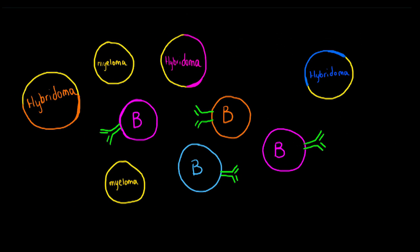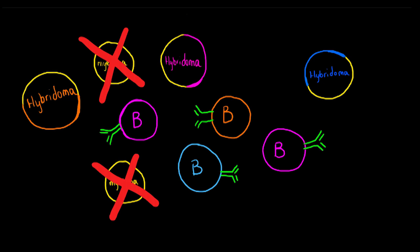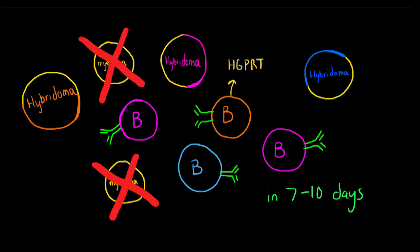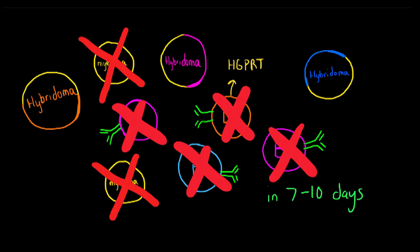Myeloma cells do not have this enzyme, so unfused myelomas or myeloma-myeloma fusions will die due to no DNA synthesis. B cells still retain this enzyme, so even though the de novo pathway is inhibited, they can still synthesize DNA. The hypoxanthine and thymidine supplementation allow the production of DNA in these B cells. However, unfused plasma B cells and B cell-B cell fusions will die because they lack the telomerase to propagate indefinitely like myeloma cells. Therefore, only B cell-myeloma fusions, or hybridomas, will survive the selection via HAT medium. They use hypoxanthine to make GTP due to the B cell contribution, and they can survive in tissue culture indefinitely due to the myeloma contribution.